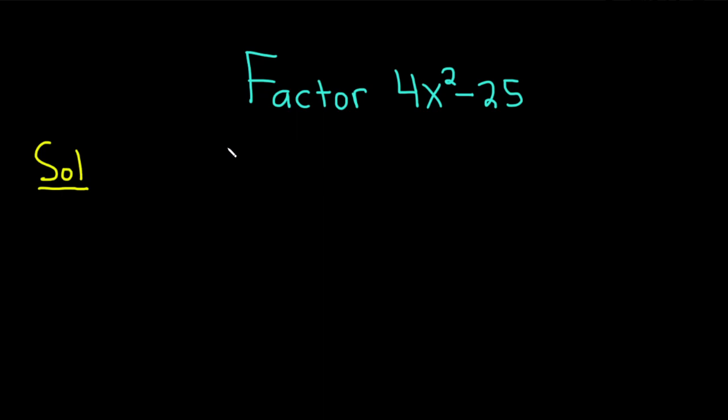There is a super powerful formula we can use to do this problem called the difference of squares formula. It says if you have a² - b², this is equal to (a - b) times (a + b).